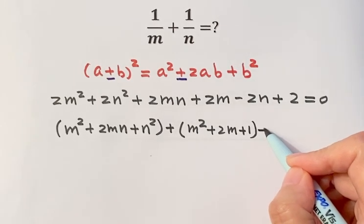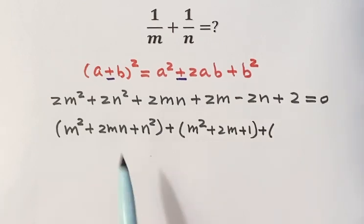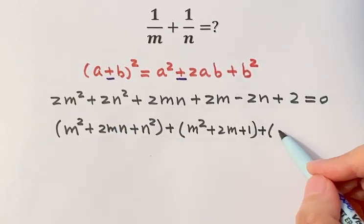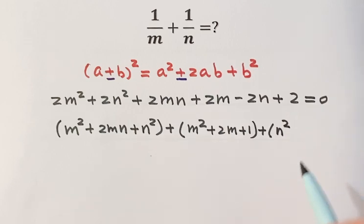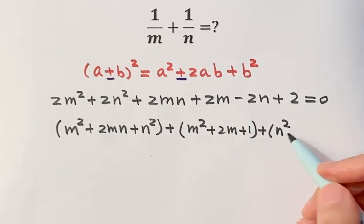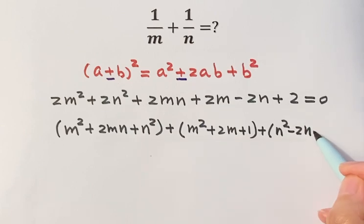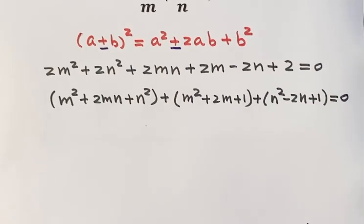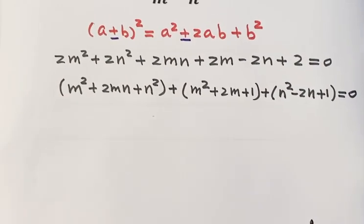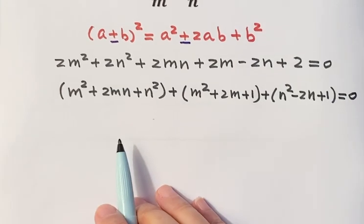Then plus, because here we still have 1n squared left, put it here. Then minus 2n. We still have 1 left. So now you can tell, so inside each group is a complete square.